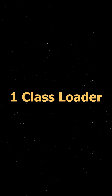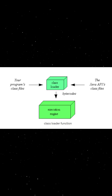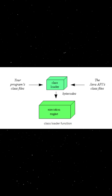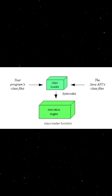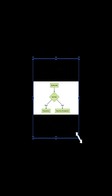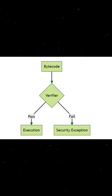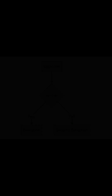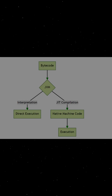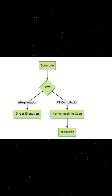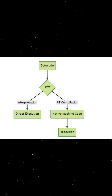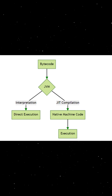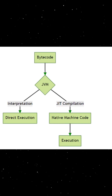First, the class loader loads your bytecode into memory. Then the bytecode verifier checks the bytecode for errors and security issues. And then the JIT compiler converts frequently used bytecode into machine code at runtime, making it fast.